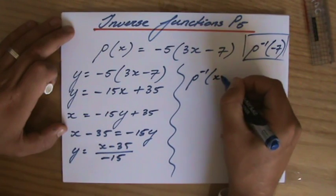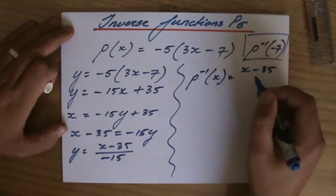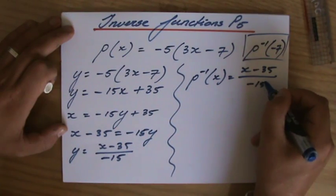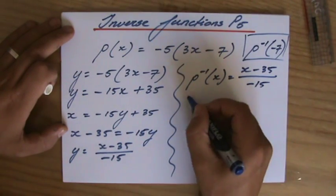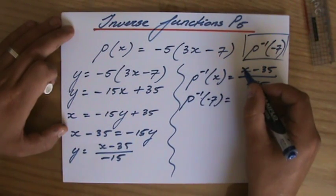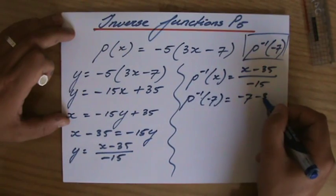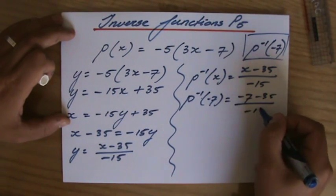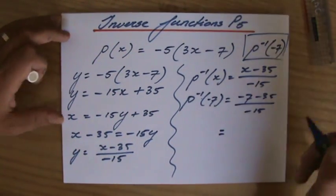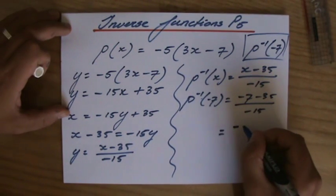So the inverse function of P, where x is the variable, is (x - 35)/-15. Evaluate for -7, not a problem. I just substitute x for -7: (-7 - 35)/-15. We don't need calculators for this. -7 - 35 is -42 over -15.